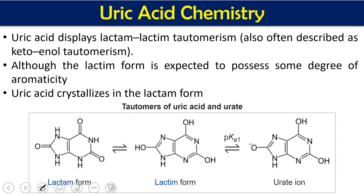The daily excretion of uric acid in our body is roughly 500 to 700 milligrams. Uric acid has two important tautomeric structures: the lactam form and the lactim form. These are the keto and enol tautomeric forms respectively. The lactim form is expected to possess some degree of aromaticity because, like a benzene ring, it has alternating double and single bonds. Uric acid crystallizes in the lactam form.